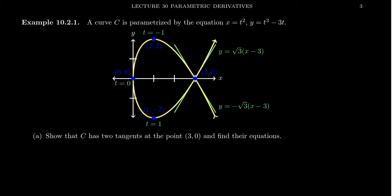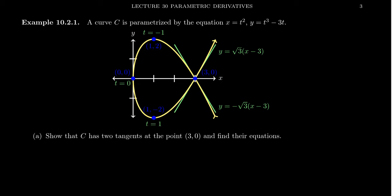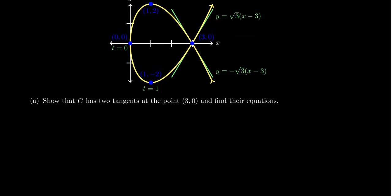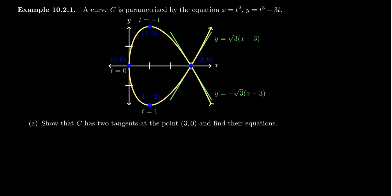When t equals negative 1, you'll be at the point (1, 2). You get this loop-de-loop shape — like you're on the Incredicoaster at Disneyland. This is what the graph looks like. What I want to do is describe the two tangent lines at the point (3, 0). We can see on the graph that the curve seems to intersect (3, 0) twice — because if you follow the loop-de-loop, you pass through (3, 0) here and also right here. So you actually get two distinct tangent lines at the same location.